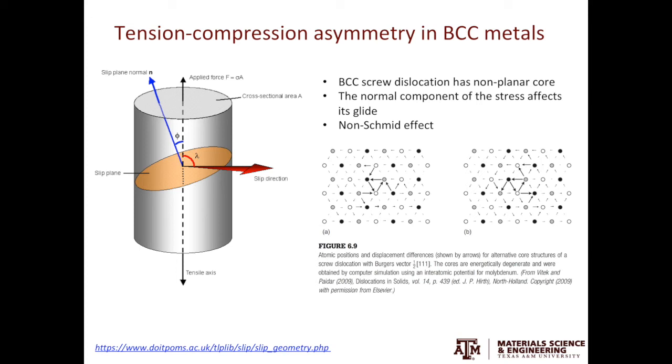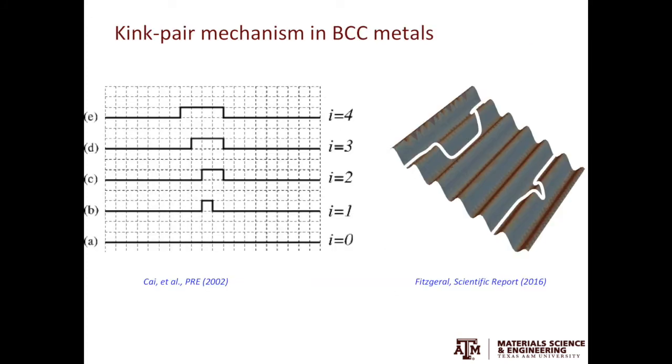Thus, you have two different values for CRSS depending on whether the applied load is tensile or compressive. The third thing I'd like to discuss is dislocation movement in BCC metals.